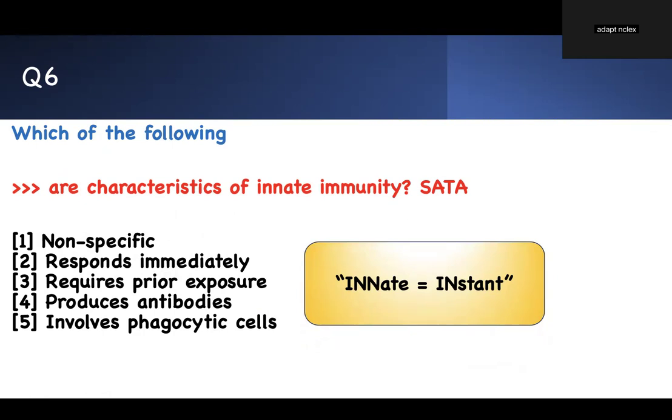Require prior exposure? If it happens right away, it doesn't require prior exposure. Produces antibodies? Antibodies are for prior exposure. Involve phagocytes? That means you need a policeman to come and kill people. That is phagocytosis. Therefore, what are the right answers? Select all that apply. Non-specific, immediately, and phagocytes. One, two, and five.